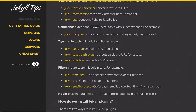The final category of plugin is a hook, which gives us fine-grained control of where we want to actually run code. This is new in Jekyll 3, so there aren't many examples of plugins using hooks yet.